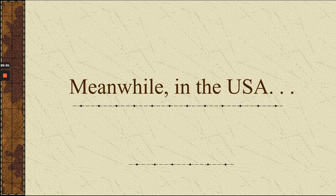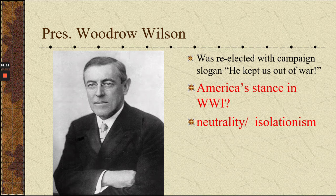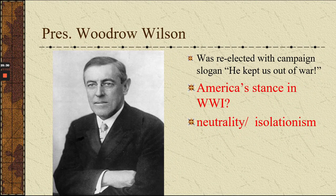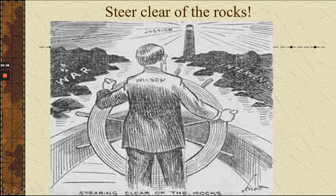While this was going on, President Woodrow Wilson maintained that the United States needs to be neutral in this war. Some tests say isolationist, so be ready for either one — but technically in World War I we were neutral. We were actually selling weapons to both sides and making lots of money. We didn't take sides. Here's a cartoon of Woodrow Wilson steering clear of rocks, trying to avoid war and intervention, following the light of justice.